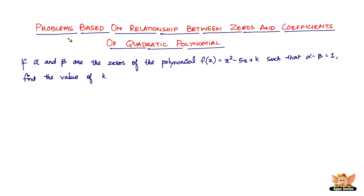In this video, let us continue to solve problems based on the relationship between zeros and coefficients of a quadratic polynomial. We have a problem which says: if alpha and beta are the zeros of the polynomial f(x) = x² - 5x + k, such that alpha minus beta equals 1, find the value of k.